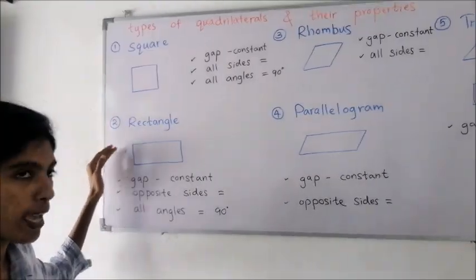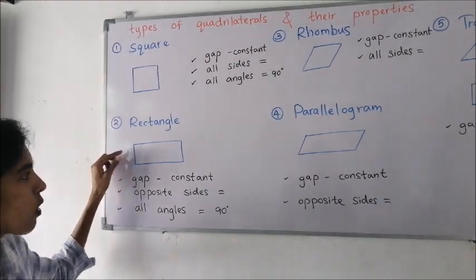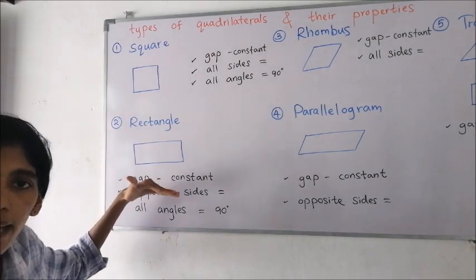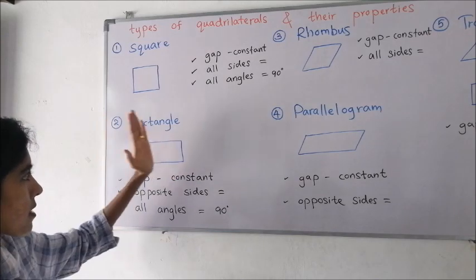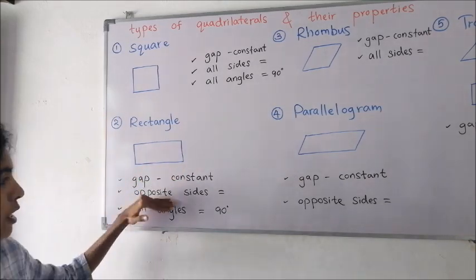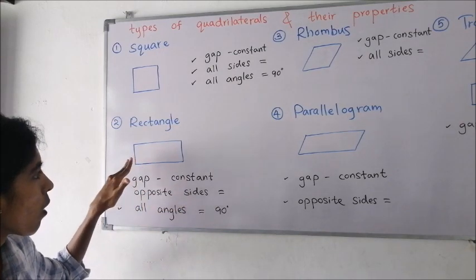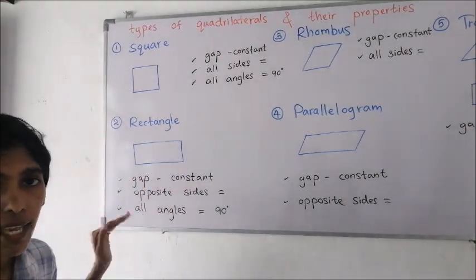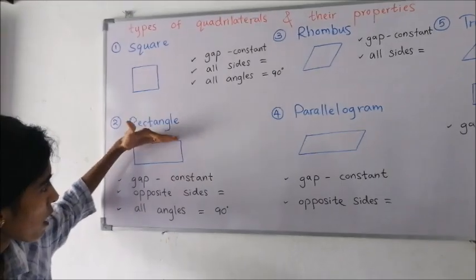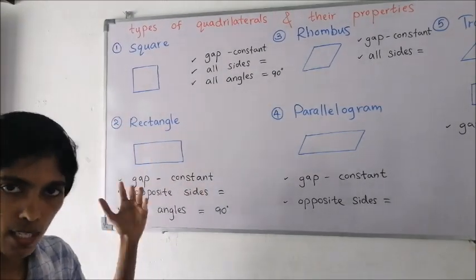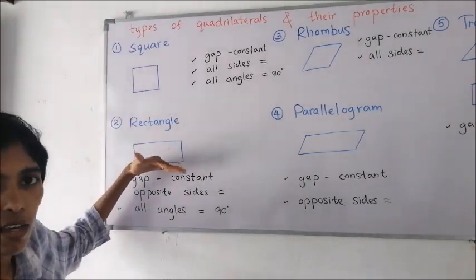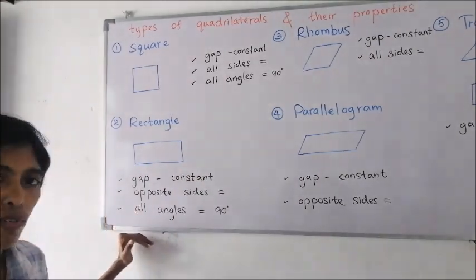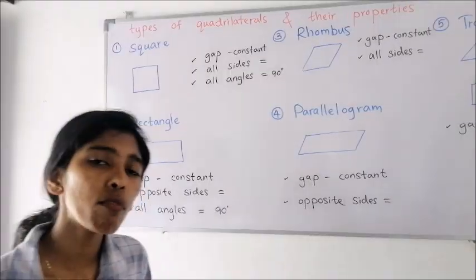The next one is a rectangle. In a rectangle all sides are not equal — only opposite sides are equal. This pair and this pair are separately equal. All the angles are right angles. The gap between opposite sides is a constant — the gap between these two opposite sides is constant, and the gap between the other pair is also constant.